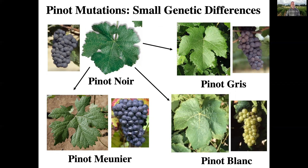We're going to talk a little bit about how small genetic variations can make big differences in grapes. Pinot Noir is an old, old variety going back at least to 900 AD in France and has given rise through mutations to a number of different genotypes, some of which we call cultivars and some of which are clones. Between Pinot Noir and Pinot Meunier, it's a single gene mutation that causes this large difference in leaf shape and some differences in the clusters.